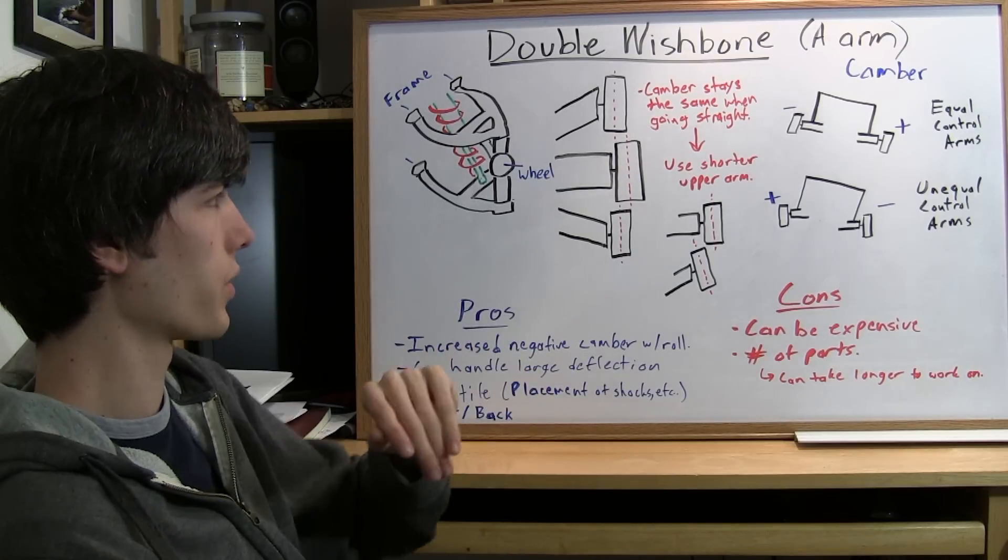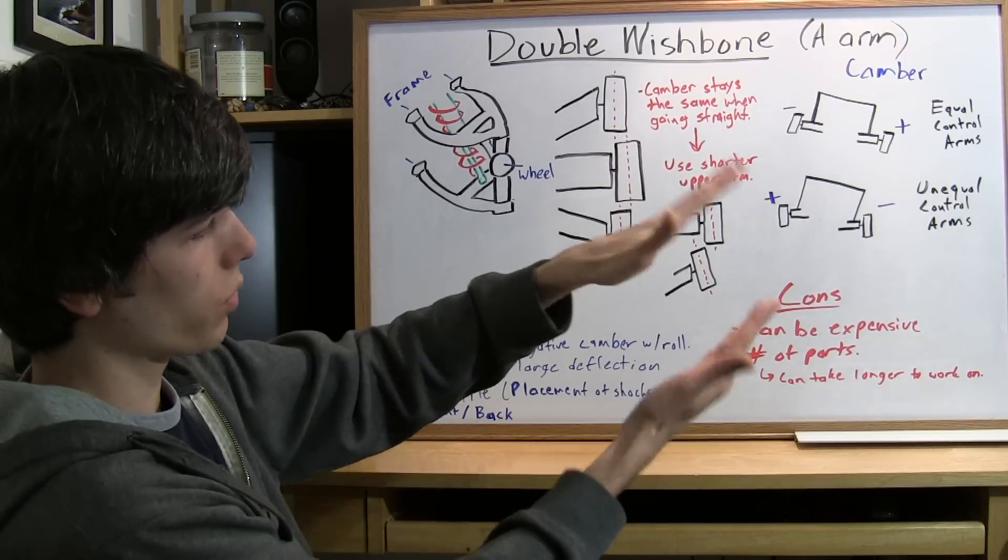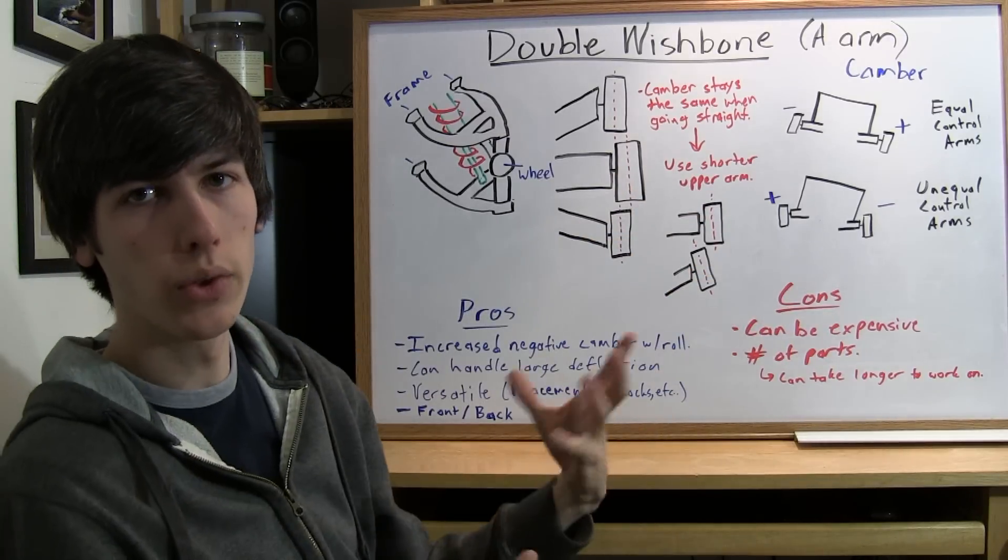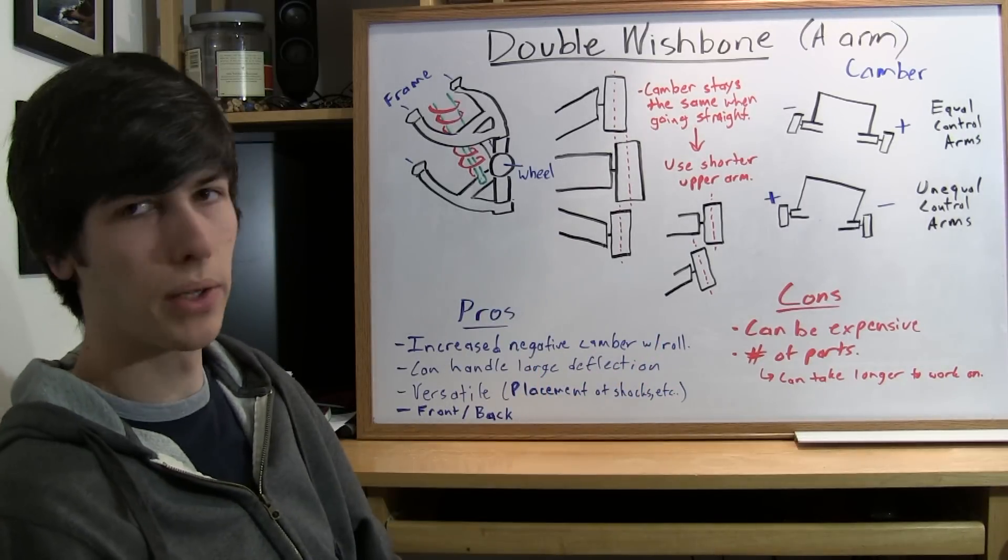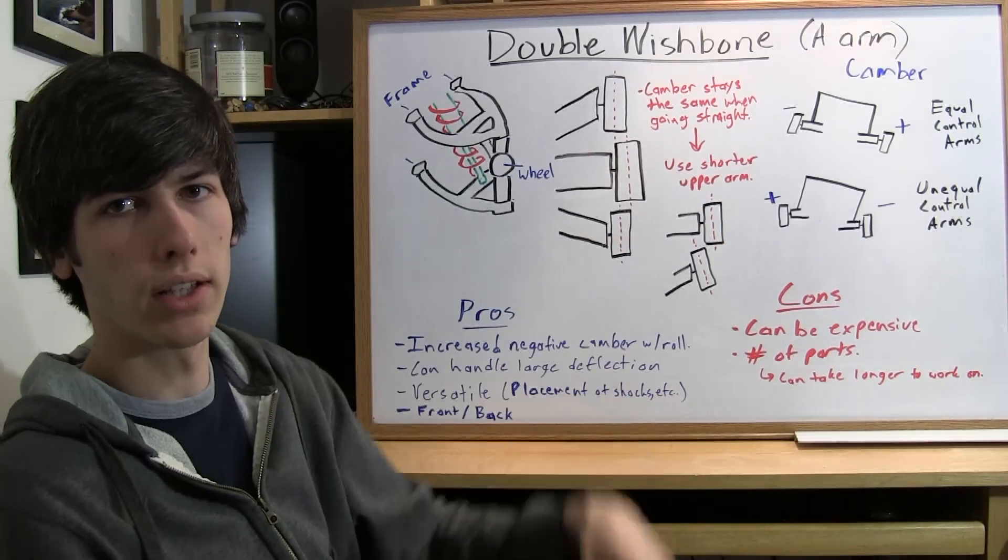Another thing, it can handle very large deflections. It has a large range with these control arms that they can move. So you can hit large bumps. Say you're doing something off-road. It's a great suspension variant for that because of how much travel it has.